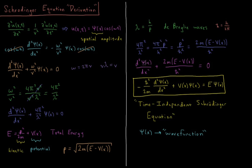Substituting this result in for 4π²/λ², we have: the second derivative of our wave function with respect to x plus 2m(E − V(x))/ħ² times ψ(x) equals zero. Rearranging — subtracting that term to the other side, multiplying by ħ²/2m, and moving V(x) to the right — gives our final result for the time-independent Schrödinger equation: −ħ²/2m times the second derivative of ψ(x) with respect to x, plus the potential energy function times ψ(x), equals the total energy E times ψ(x).